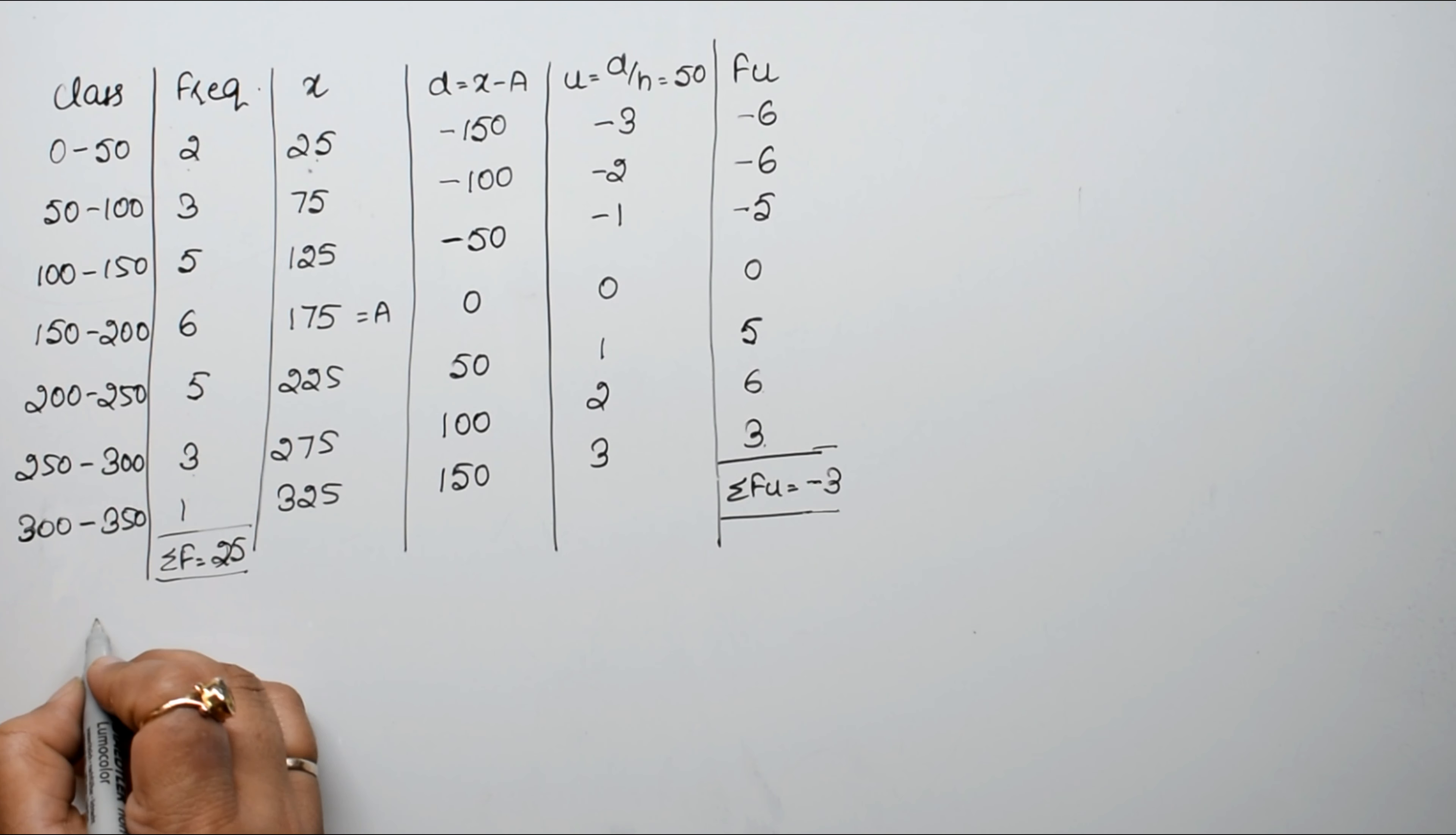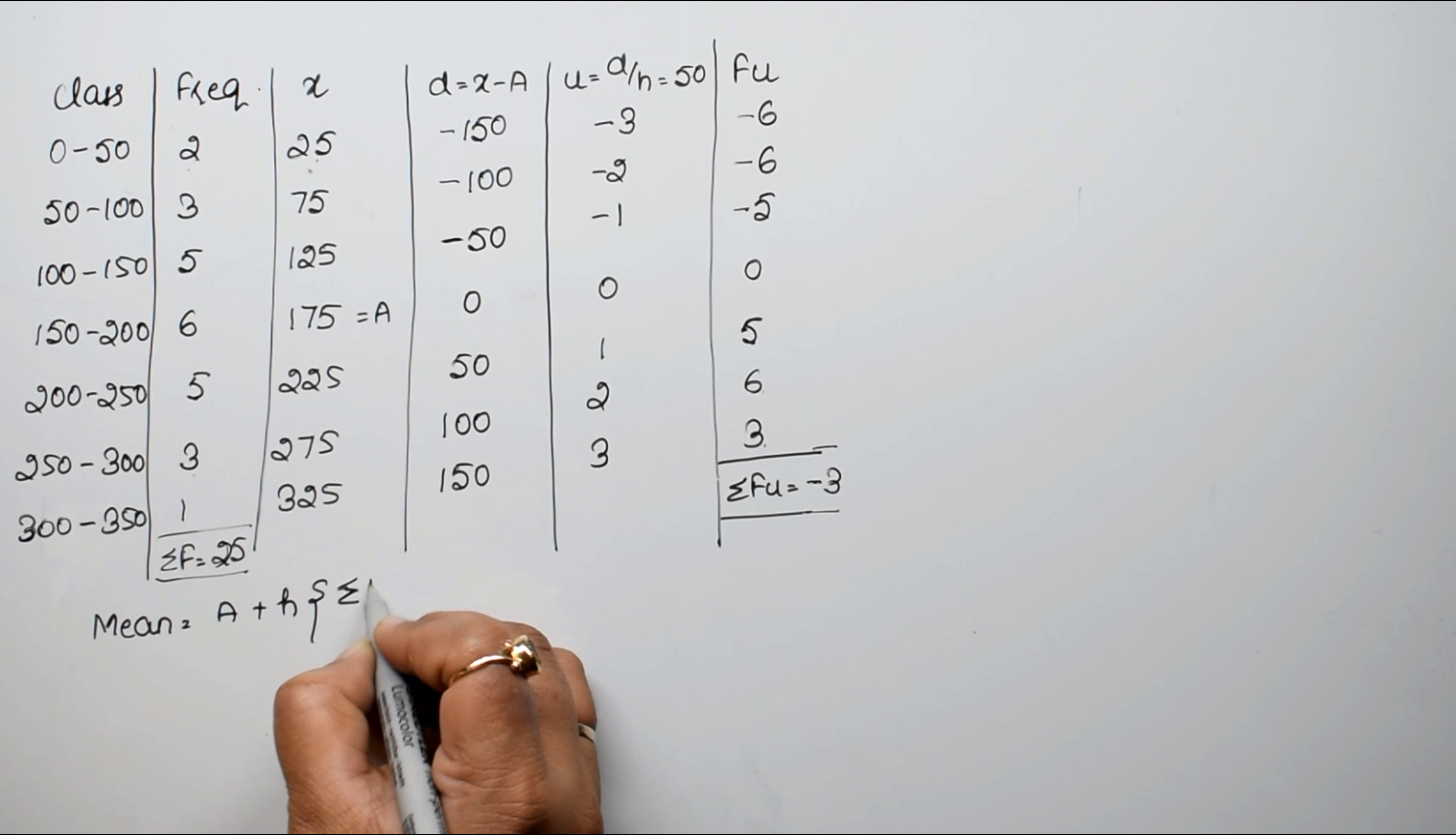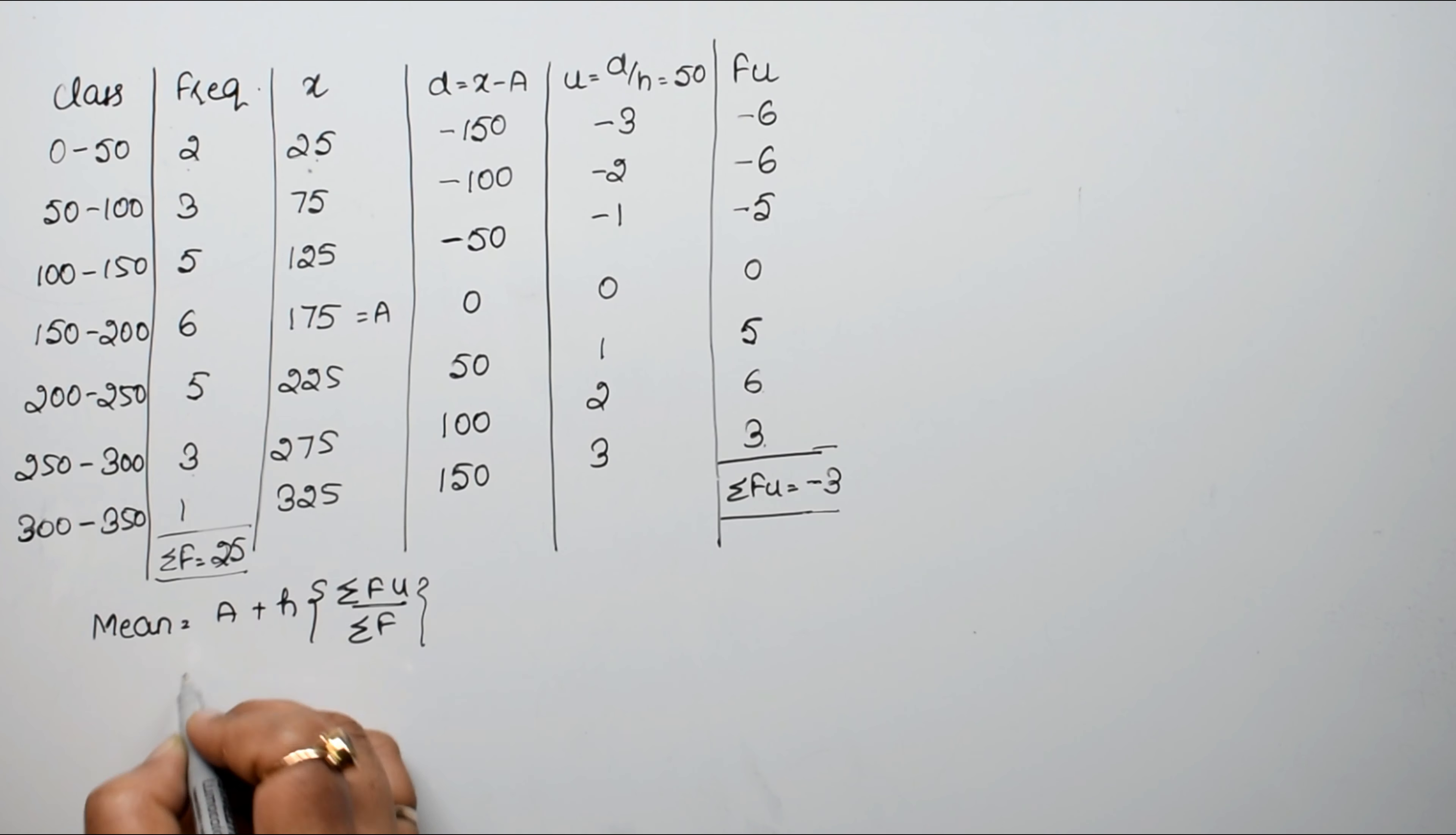Now we have to find mean. Mean is assumed mean plus h into sigma f u upon sigma f, right? So assumed mean was 175 plus h is the difference, that is 50. f u is minus 3.